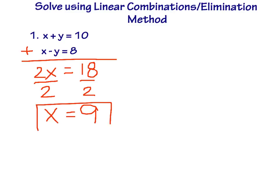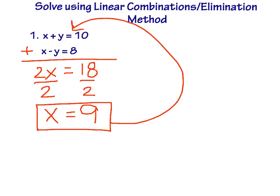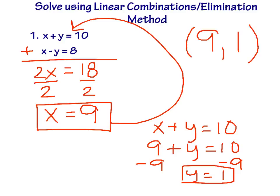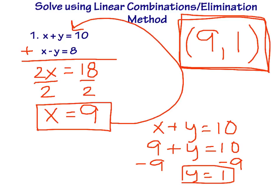Even though this isn't the substitution method, in step four you still have to substitute the value from step three into any equation and solve. This is only half my answer. I'm going to substitute 9 into the first equation: x plus y equals 10 becomes 9 plus y equals 10. Subtract 9 from both sides and I get y equals 1. My final answer is the ordered pair 9, 1. If I were to graph these two equations, the intersection point would be the ordered pair 9, 1.